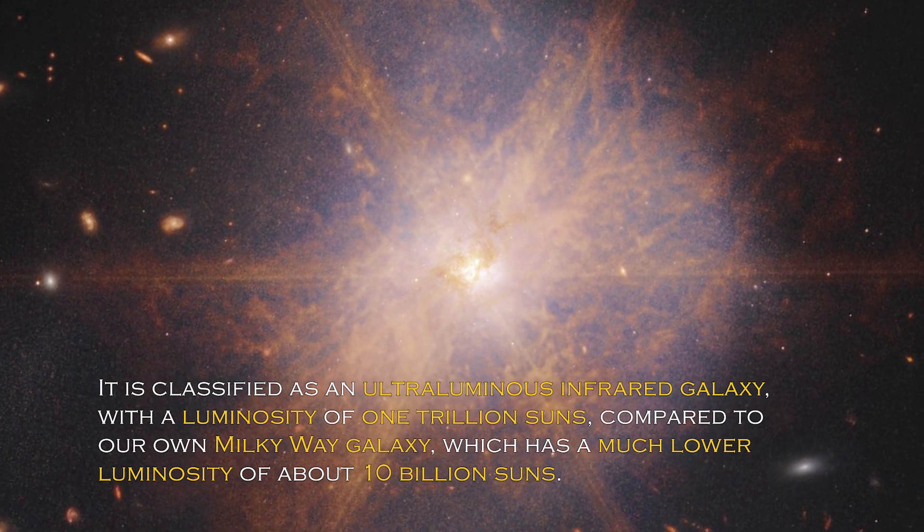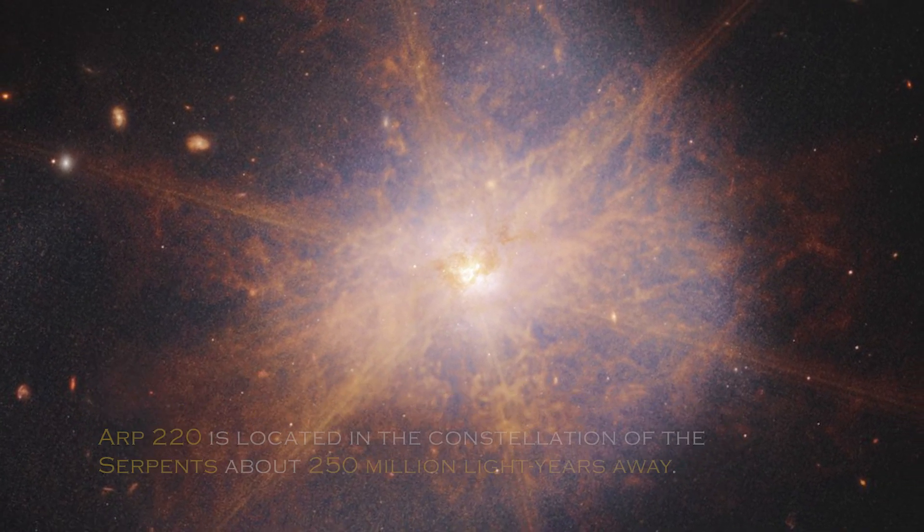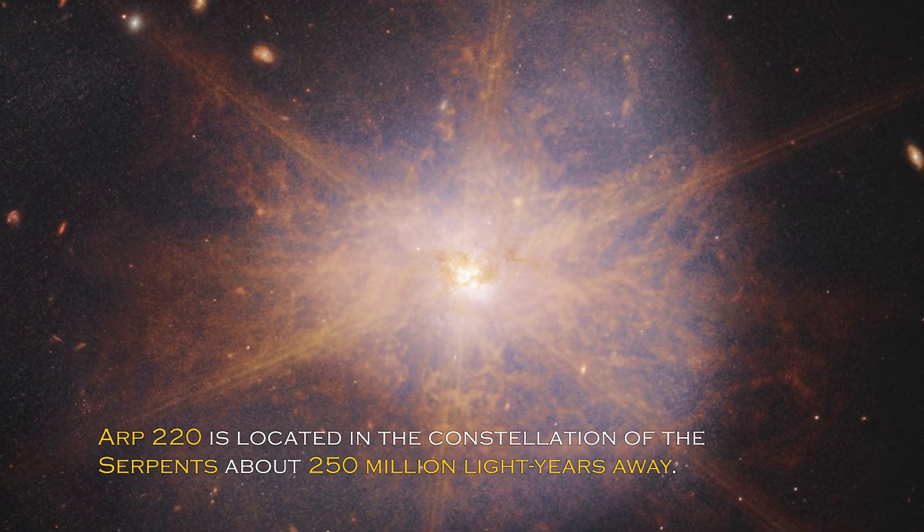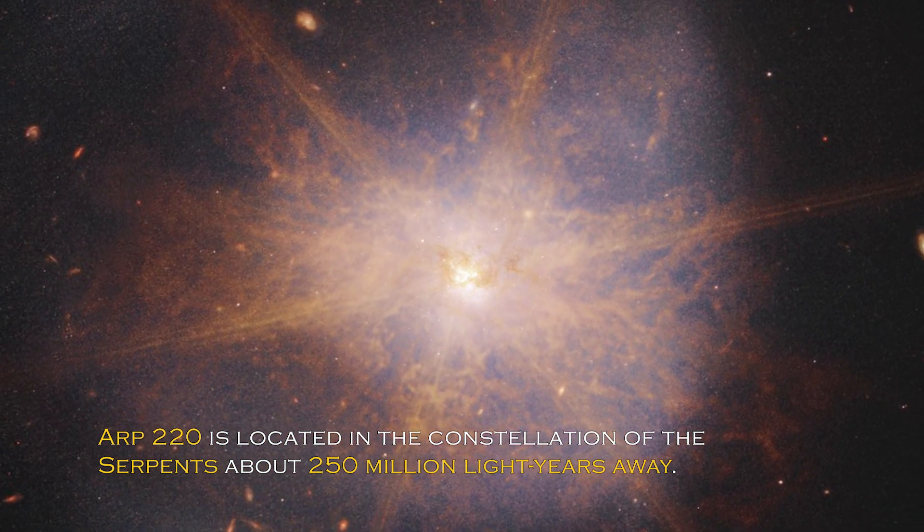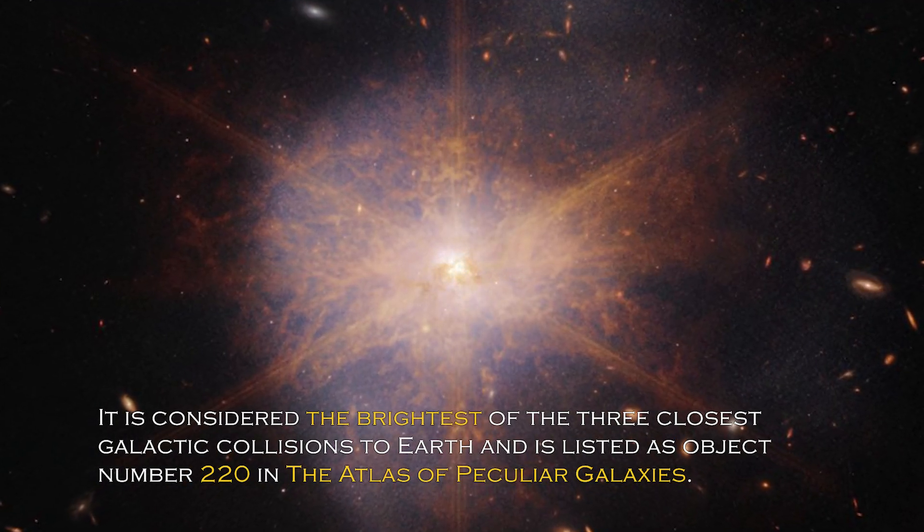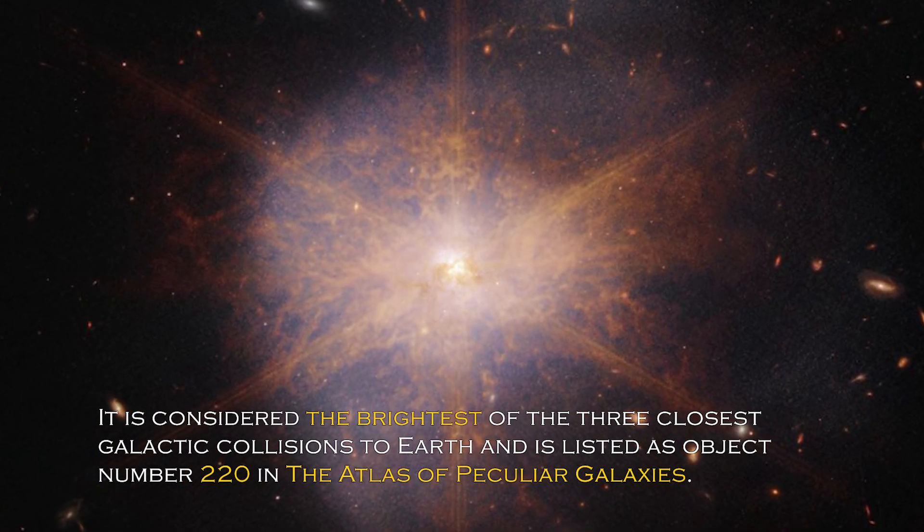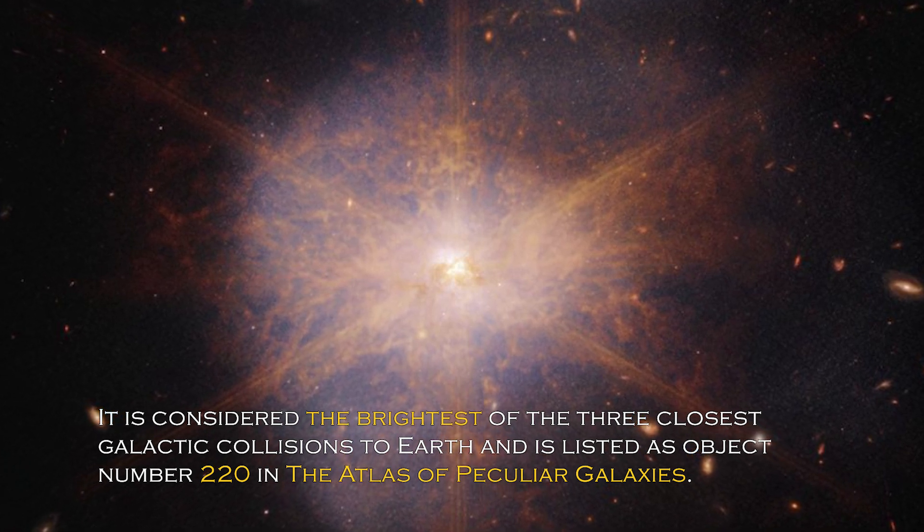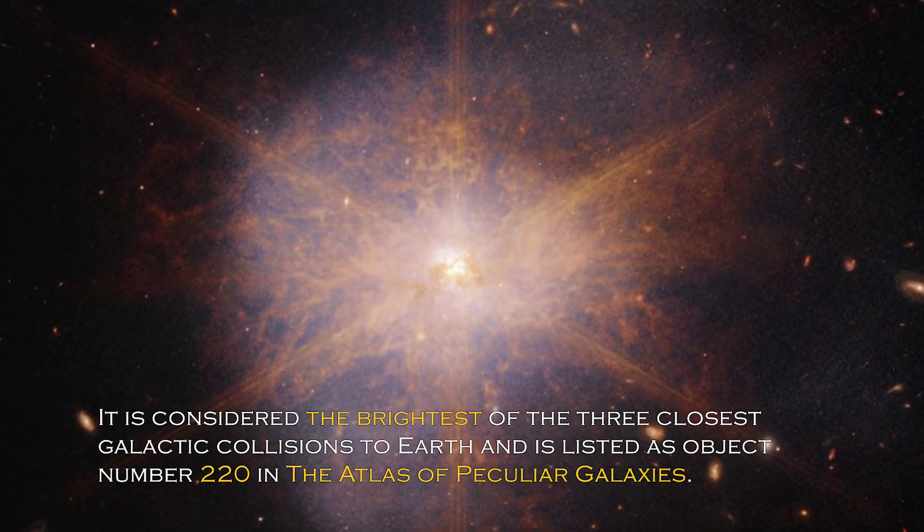ARP 220 is located in the constellation of the Serpents, about 250 million light-years away. It is considered the brightest of the three closest galactic collisions to Earth, and it is listed as object number 220 in the Atlas of Peculiar Galaxies.